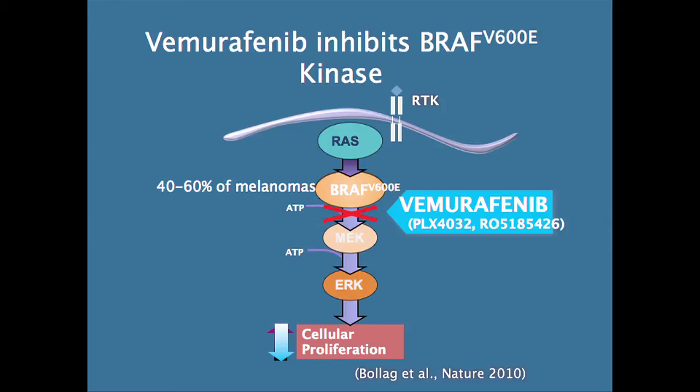So vemurafenib inhibits the mutated BRAF at the V600E position. Normally, when a cell gets stimulated, you have a growth factor that binds to a receptor, then RAS gets stimulated, the BRAF protein gets stimulated, sends a signal to MEK, sends a signal to ERK, and cellular proliferation occurs within the nucleus. If you give vemurafenib, it shuts off the signal between BRAF and MEK and shuts off growth within the cell. And once the cellular growth is cut off, they go through this natural process called apoptosis and they die off. It's very, very dramatic.